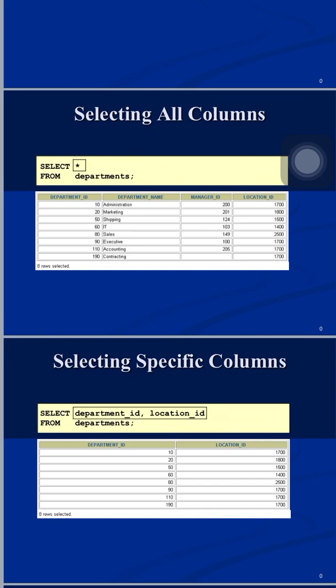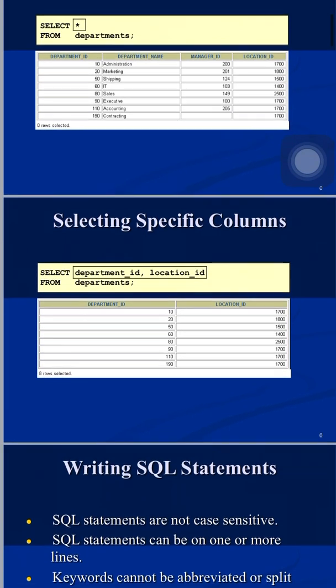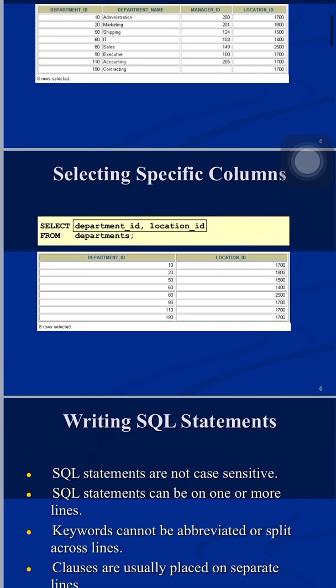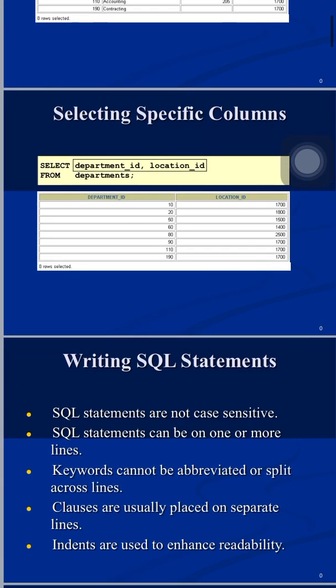The sequence of columns is not fixed — it depends on the order you mention them in the SELECT clause. For example, if I write SELECT location_id, department_id FROM departments, then location_id will be printed first and department_id after that. So the output sequence matches the order of columns as written in the SELECT clause.